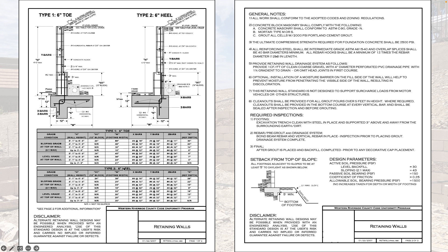Below the detail are notes — depending on how tall your retaining wall is and the size of the slope, key dimensions for your footing, keyway, rebar, and spacing will vary. Your contractor will need to review those. There are also general notes on the second page covering concrete block masonry, mortar type, PSI requirements, and other generic information.